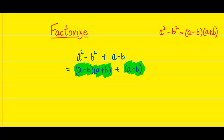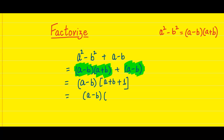In these two terms we can see that the binomial a minus b is common to both these terms. It is coming in both these terms. So we can safely take out the binomial a minus b common and put it out. From the first term we get a plus b, and from the second term, because we have taken a minus b binomial outside, one is left. So the two factors for the question is a minus b into a plus b plus one.